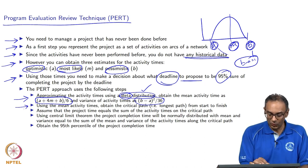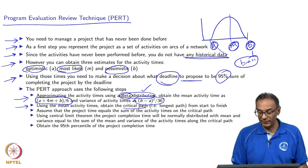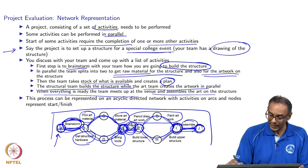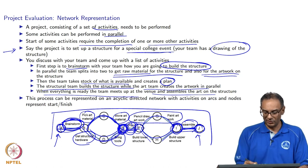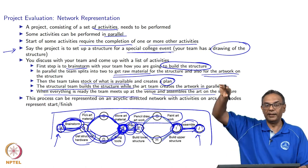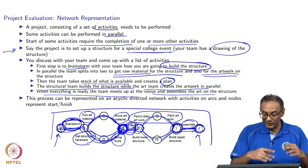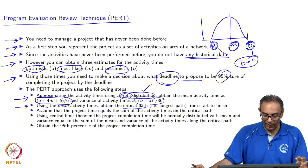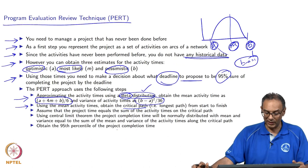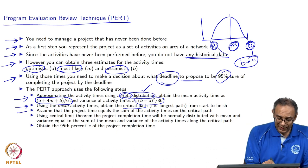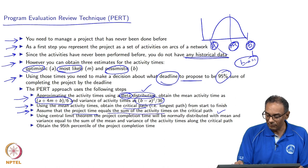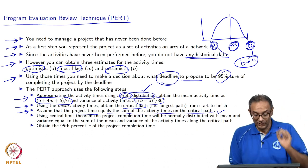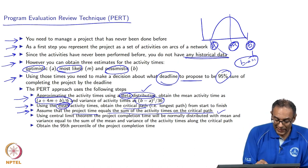Next, we compute the critical path — the longest path from start to finish, from node A to node J. We pick the longest path because that is the total time the project will take: even if the artwork finishes faster than the structure, you still have to wait for the longer activity before proceeding. The path times are random, unlike standard shortest path problems. We assume the project time equals the sum of activity times along the critical path, computed using mean values.